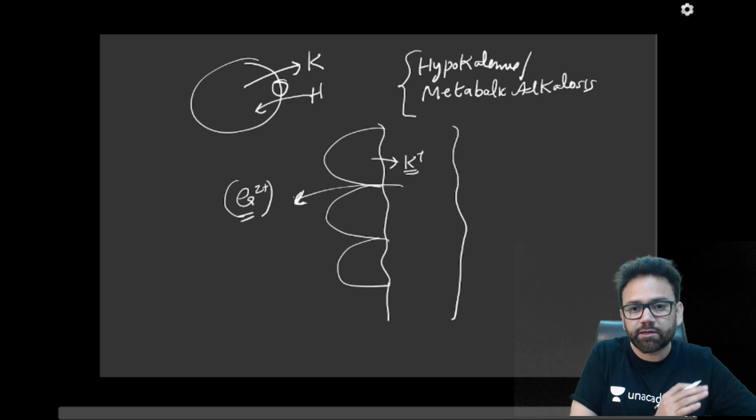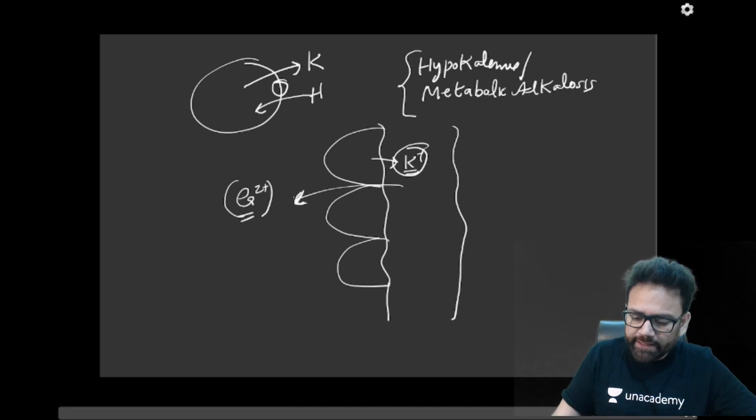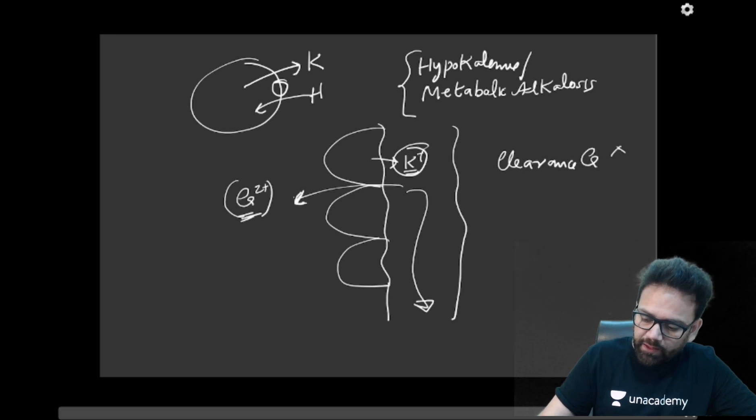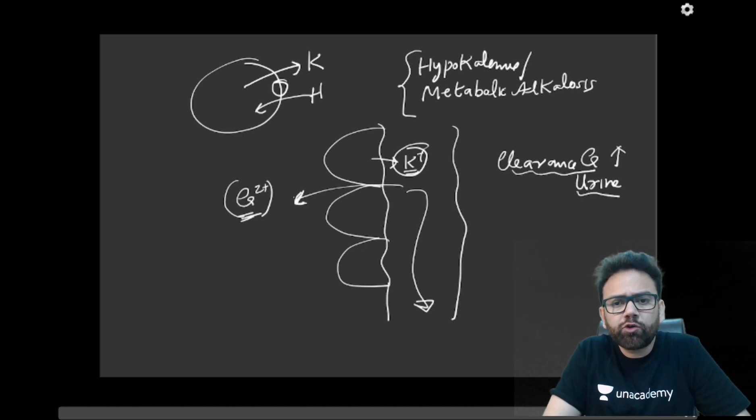So normally when NKCC is present and you know that from ROMK channel, potassium is secreted back. So these are creating a positive environment in the lumen. So that will cause reabsorption of calcium. So if you block NKCC, what will happen? This will not be happening. So that will increase clearance of calcium in the urine. So clearance of calcium will be increased in the urine.